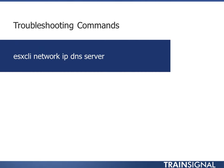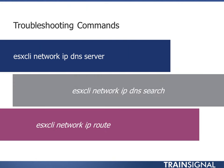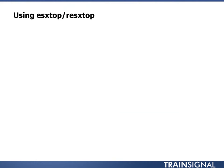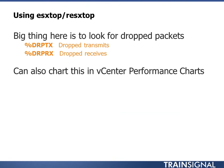For troubleshooting commands, we looked at ESX-CLI network IP DNS server, ESX-CLI network IP DNS search, and ESX network IP route. You can use those to set or get the information. In ESX top, a big thing is to look for dropped packets — dropped transmits and dropped receipts. You can also chart this in the vCenter performance charts. ESX top shows a percentage; vCenter shows an actual number. If it's a very low percentage, or you want to run it over time, look at the vCenter performance charts and the total number.